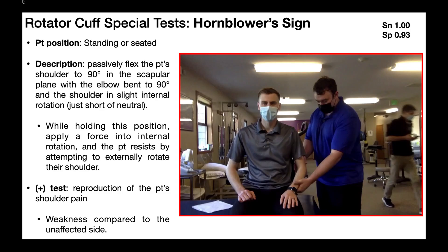So how do we conduct this test? It can be done in either standing or a seated position. Basically, the PT is going to passively flex the patient's shoulder up to about 90 degrees in the scapular plane with the elbow bent to 90 degrees. The shoulder joint overall is going to be in slight internal rotation, just short of neutral. While holding that position, the PT is going to apply a force into internal rotation, and the patient's going to resist by attempting to externally rotate their shoulder. It's essentially a variation of the external rotation manual muscle test, just occurring in a slightly different position.